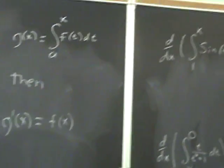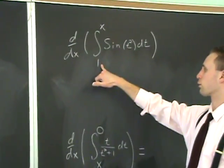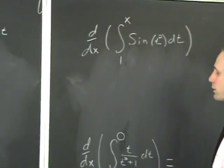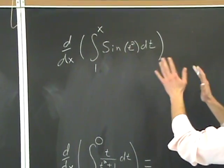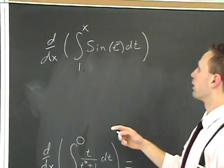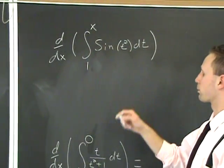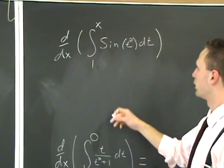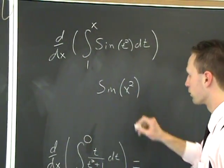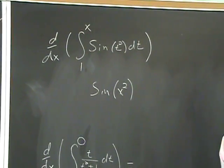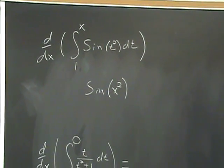It actually works independent of what the lower bound is, too, by the way. Just as long as it's constant. Whenever you differentiate it, it's just going to be, well, here you go. The derivative of this function with respect to x, according to the rule, is just going to be the sine of x squared. All that you've got to do is plug in x wherever there's a t, and the rule goes just that way.